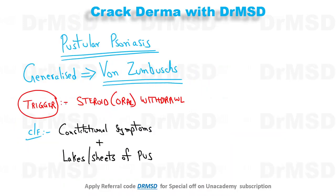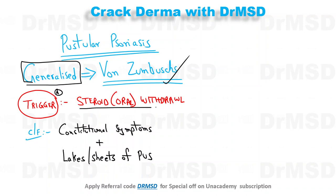We are discussing generalized pustular psoriasis, also called Von Zumbusch pustular psoriasis. The most important trigger for onset of this condition is the withdrawal of steroids. Clinically, the psoriatic patient will present with constitutional symptoms such as fever, arthralgia, myalgia, chills, and rigors.